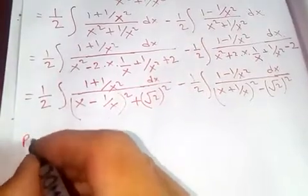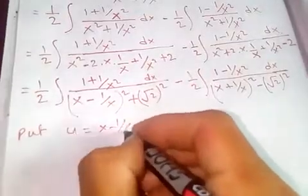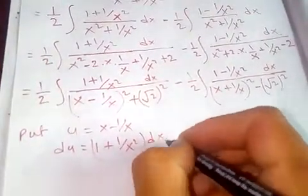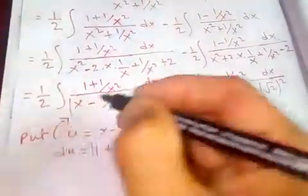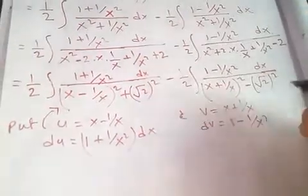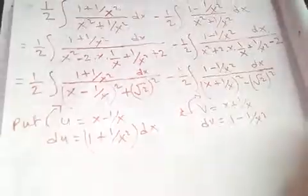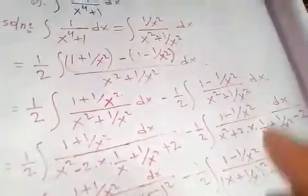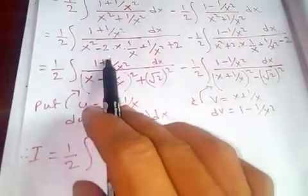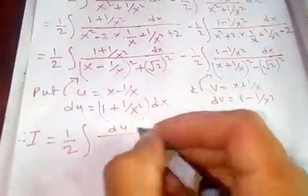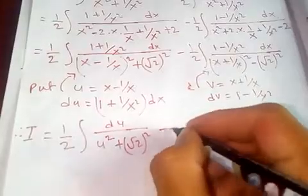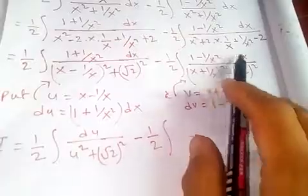Let's use the substitution method. Let u equal x minus 1 over x in this integral, so du will be 1 plus 1 over x squared, dx. And let v equal x plus 1 over x, so dv will be 1 minus 1 over x squared. Let's put these substitutions into each integral. Therefore our integral i becomes half integral of du over u squared plus root 2 squared, minus half integral of dv over v squared minus root 2 squared.